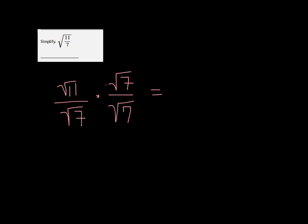The reason we do that is because in the bottom, we're going to get the square root of 49, and the top, of course, is the square root of 77.